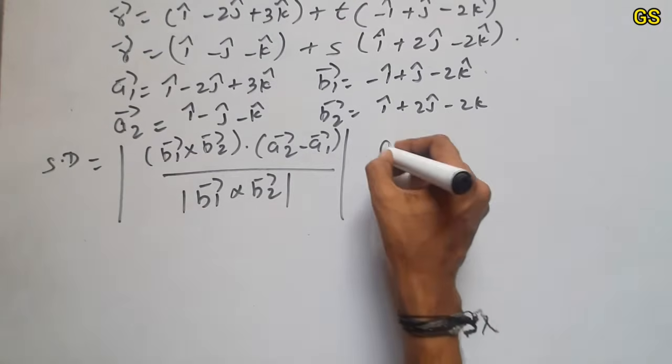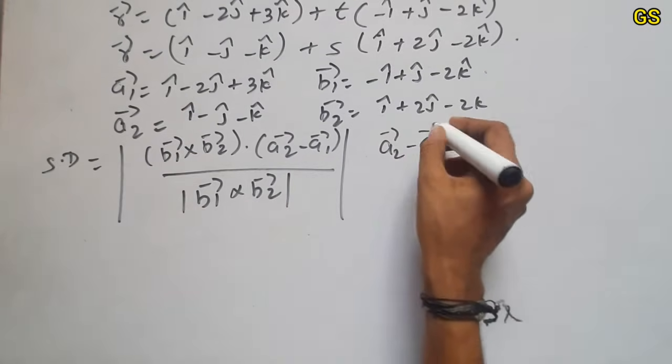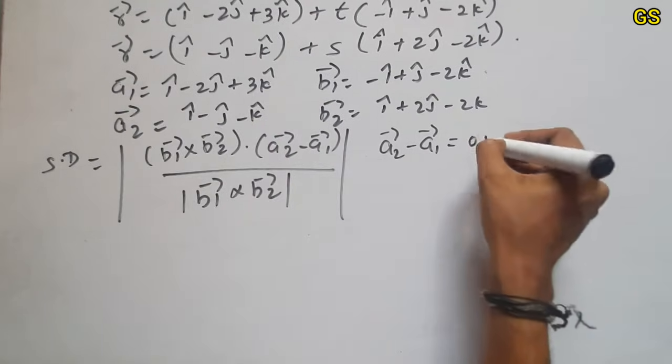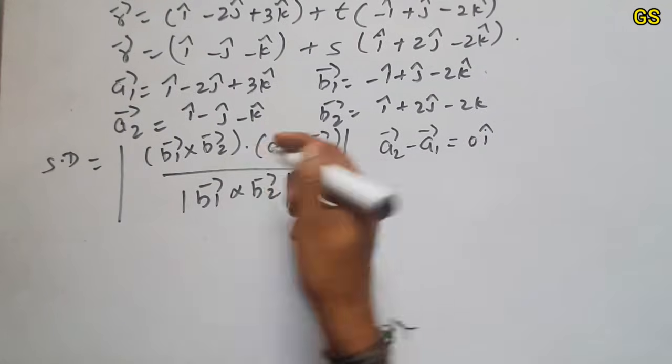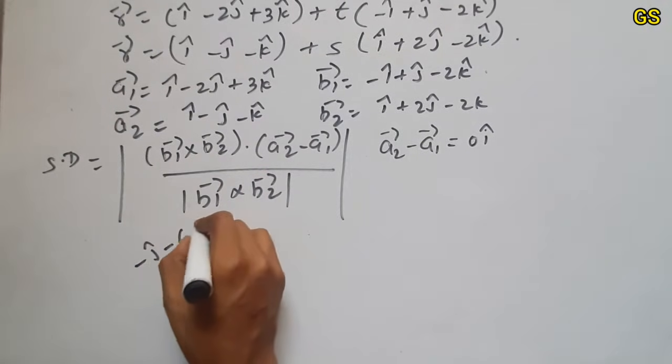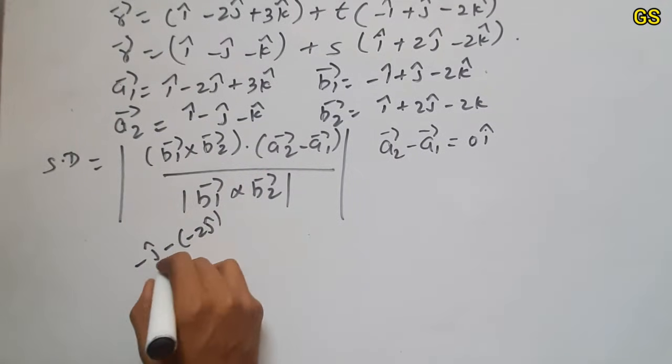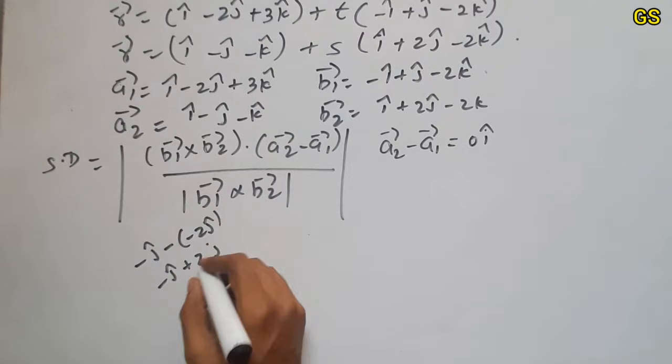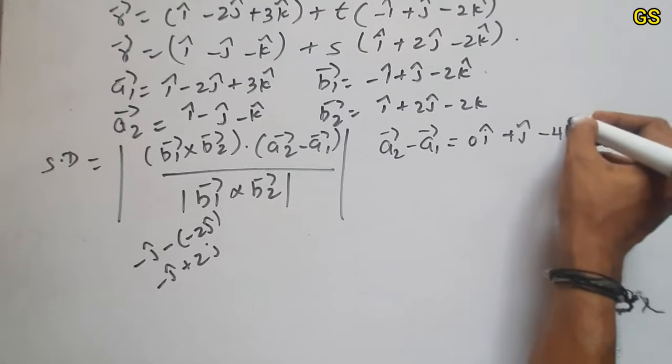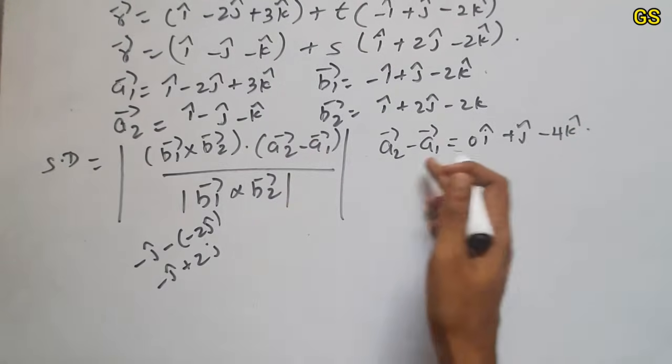So I will add a2 minus a1 first. a2 vector minus a1 vector. So i minus i is equal to 0. minus j minus of minus 2j, so this is minus j plus 2j. So 2j minus j is equal to j. minus k minus 3k is equal to minus 4k.